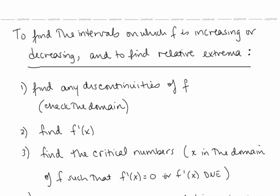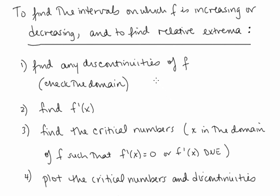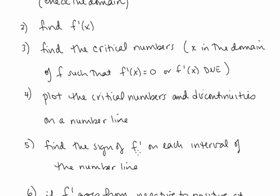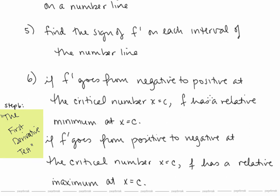To find the intervals on which f is increasing or decreasing and to find relative extrema: Step 1, find any discontinuities of f by checking the domain — we might see asymptotes. Step 2, find f'. Step 3, find the critical numbers. Step 4, plot the critical numbers and any discontinuities on a number line and test the sign of f' on each interval. If f' goes from negative to positive at x = c, f has a relative minimum there. If f' goes from positive to negative at x = c, f has a relative maximum. This is the first derivative test for relative extrema.